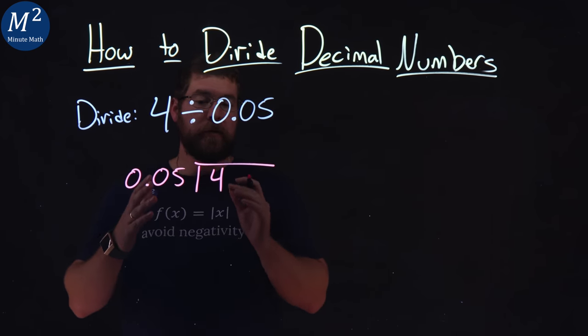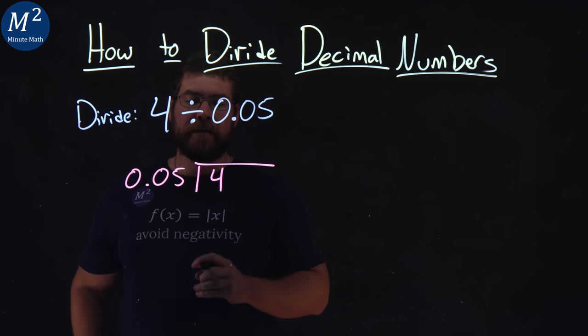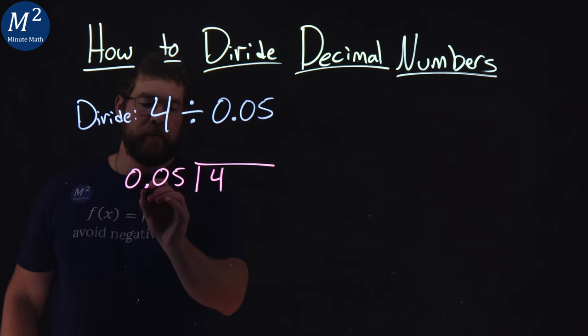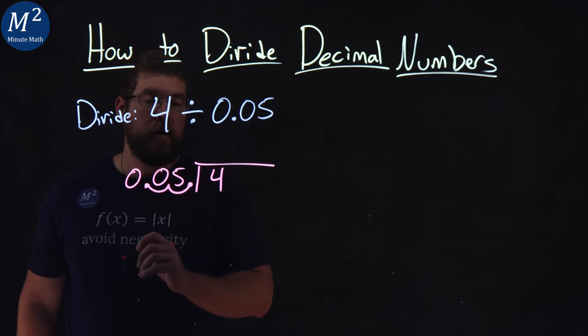Now, if you remember from before, what we want to do is rewrite this to have our 0.05 to be a whole number. To do that, move the decimal place over twice, and it goes right there.